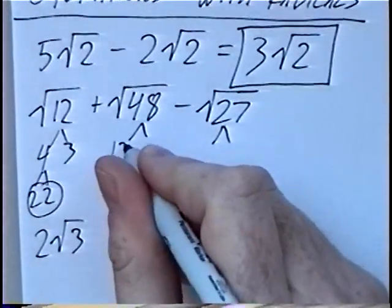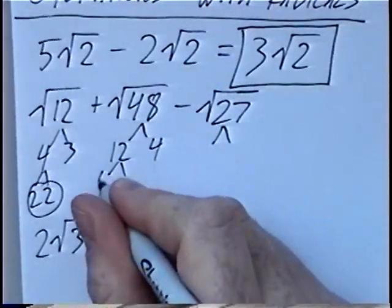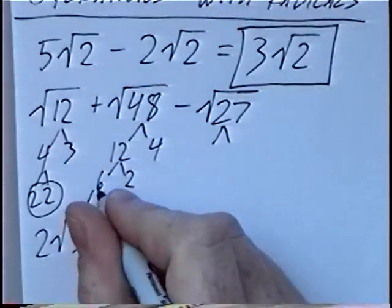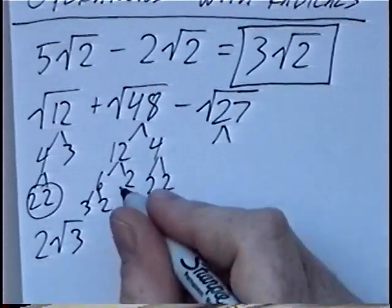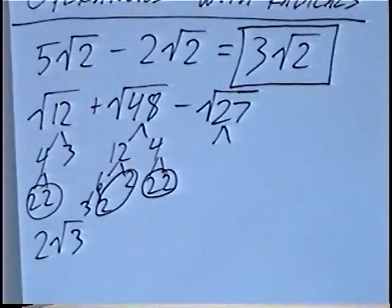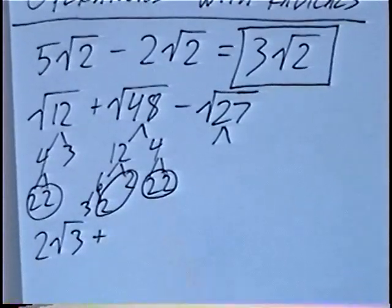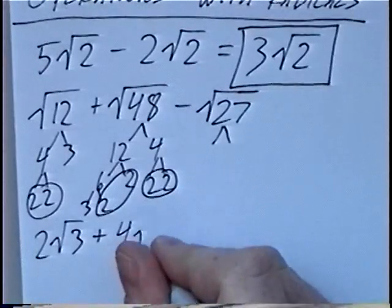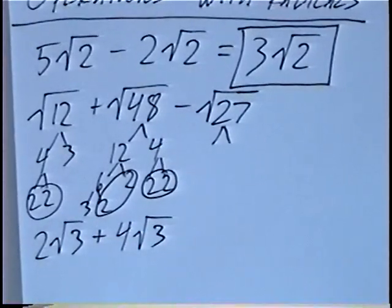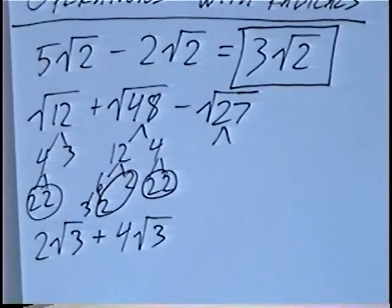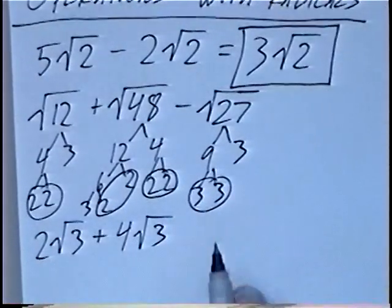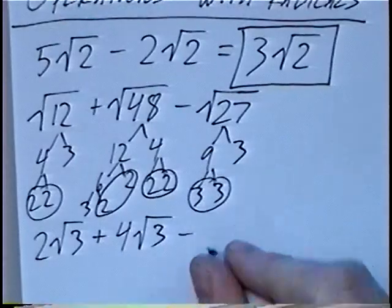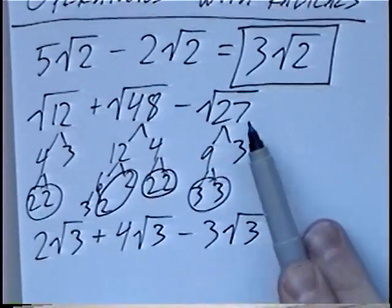Simplifying 48: we use 12 times 4. The 12 becomes 6 and 2, the 6 becomes 3 and 2, and the 4 becomes 2 and 2. For the square root, we look for pairs of 2. We have 2 sets of 2, so we multiply those outside: 2 times 2 is 4, with a single 3 left over. Radical 48 equals 4 radical 3. Simplifying radical 27: 9 times 3, and 9 is 3 times 3. With a single pair of 3s, bringing the minus sign down, we get minus 3 radical 3.